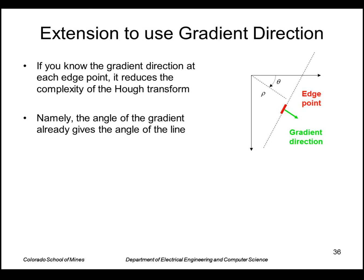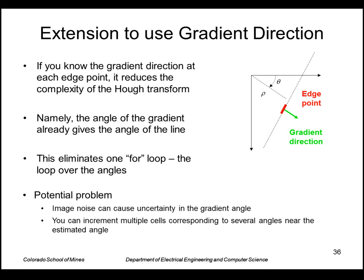A couple of other notes on the Hough transform. You can make it more efficient by using the gradient direction. Right now we've just used the location of an edge point, but most edge operators also return a direction. The gradient direction is essentially the same as the perpendicular vector direction, which determines the angle theta. So we don't need to loop over angles because we already know the angle given an edge point — that saves one for loop and greatly speeds things up. The gradient angle can be noisy though, so it might be better to increment multiple cells corresponding to several angles near the estimated angle.